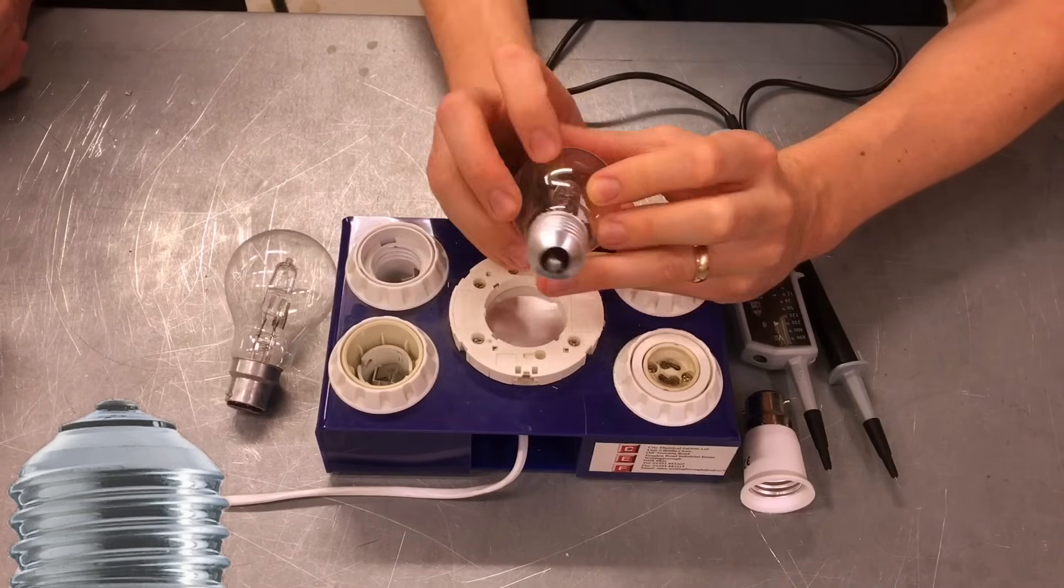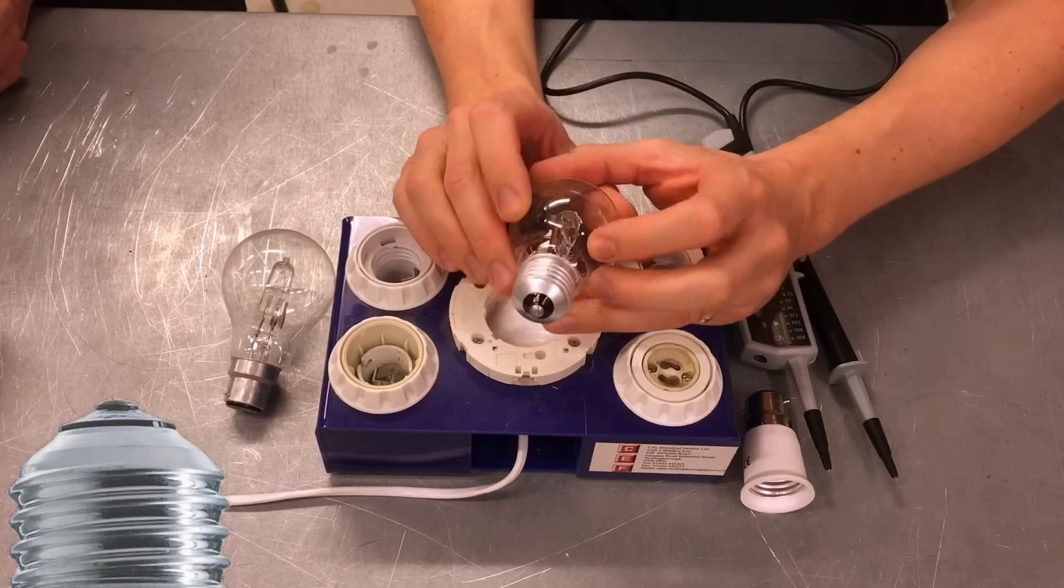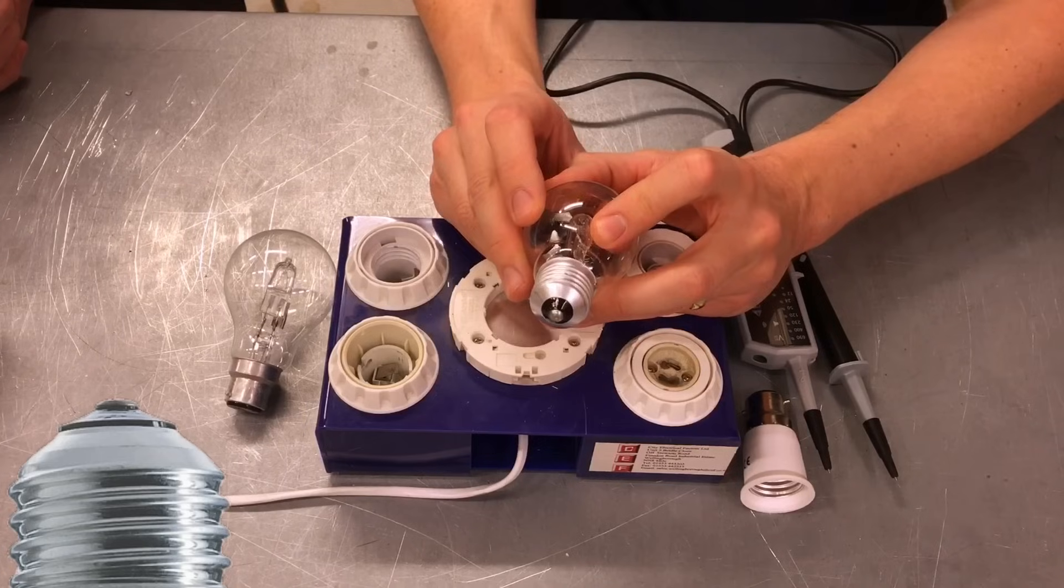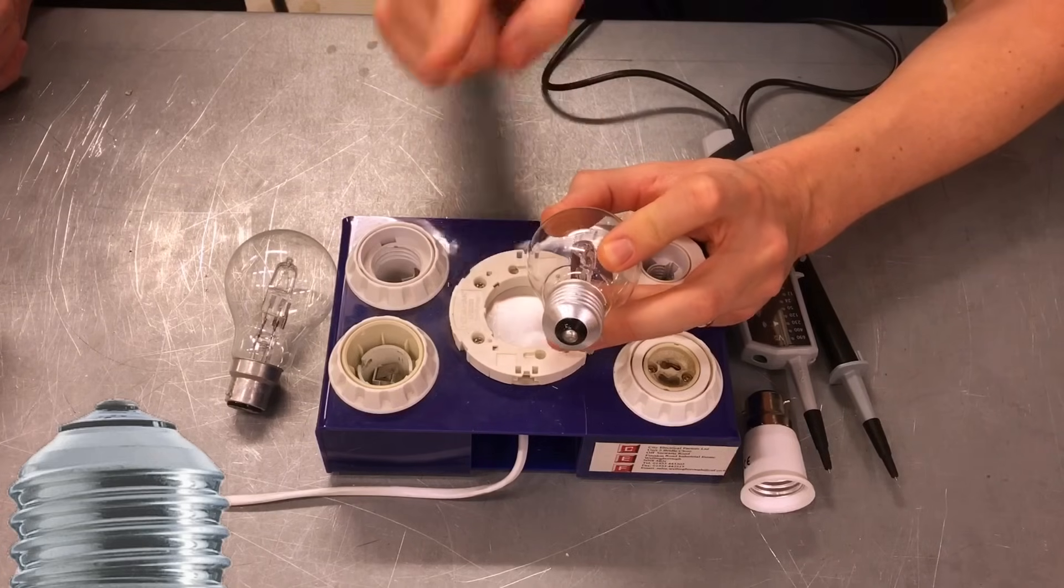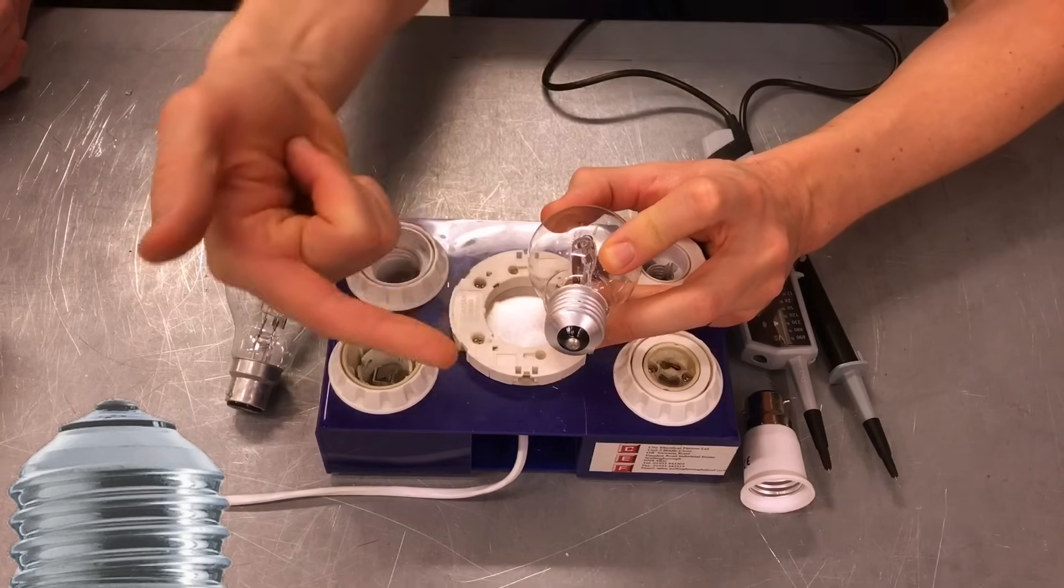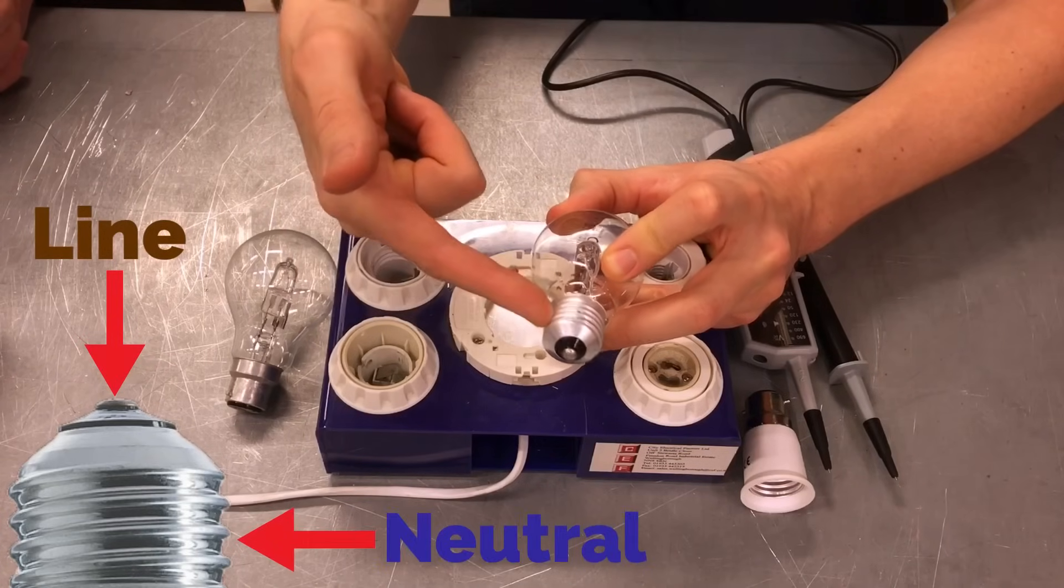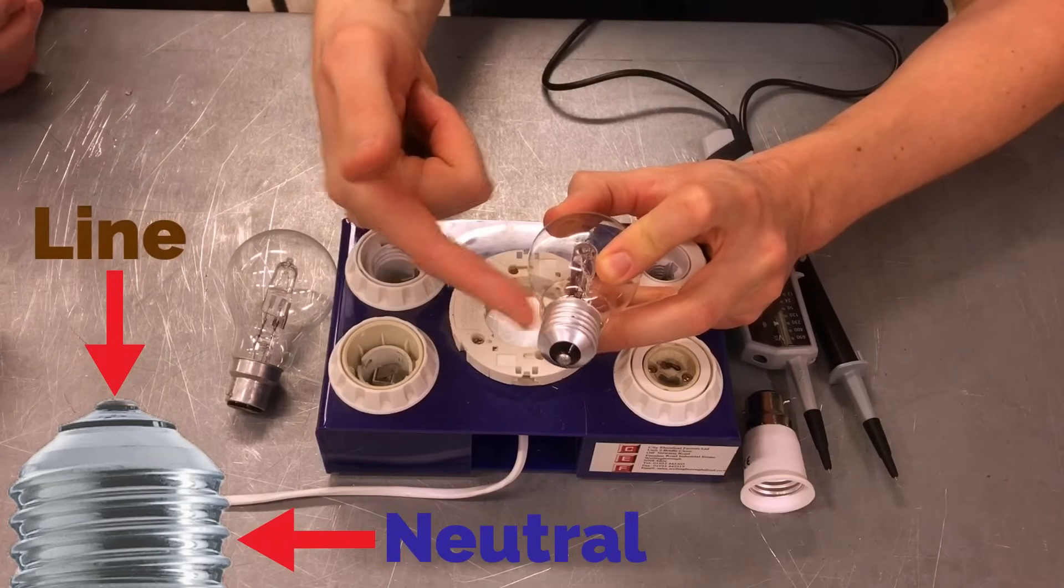Now, the issue with this is that in BS-7671, it makes it very clear that polarity testing must be carried out to make sure that when you've installed your lamp holder, this pin is the line conductor and this screw connection is the neutral.